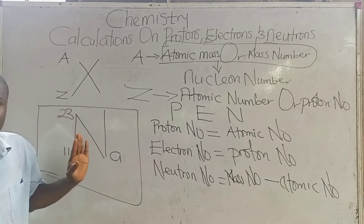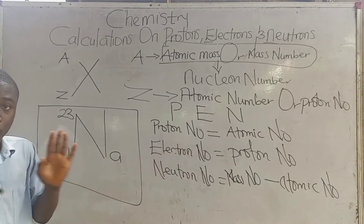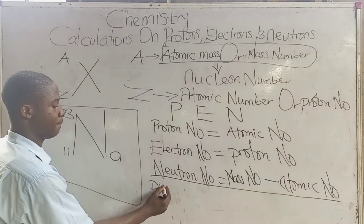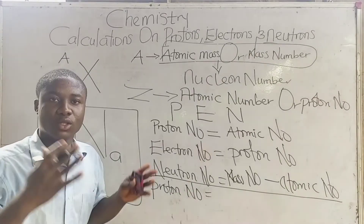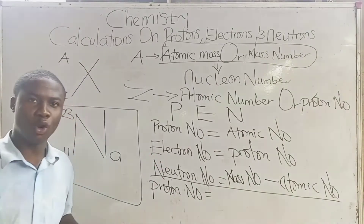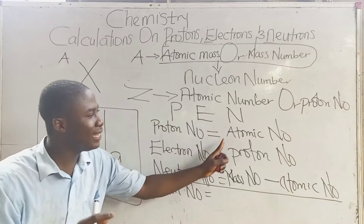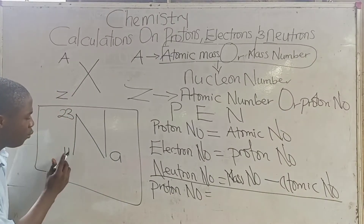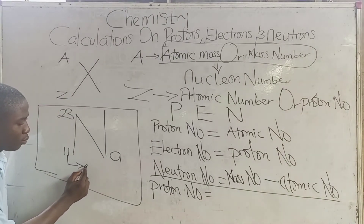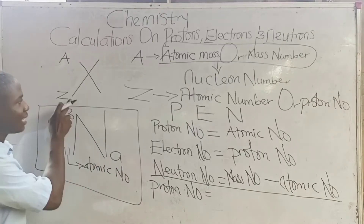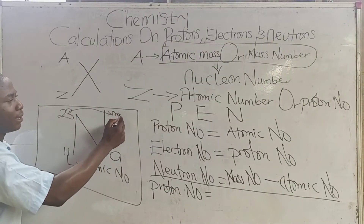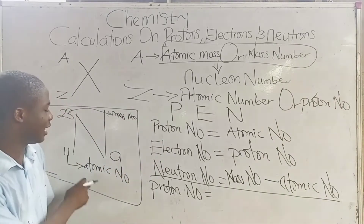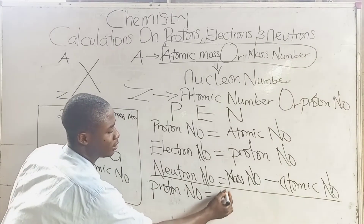This sodium atom is neutral — it's without a charge. Let's apply what we've learned. For the proton number, I said the proton number is the same as the atomic number for a neutral atom. The atomic number is 11, so the proton number becomes 11.